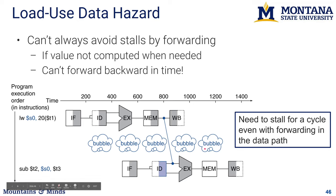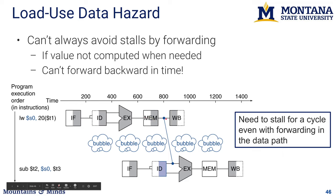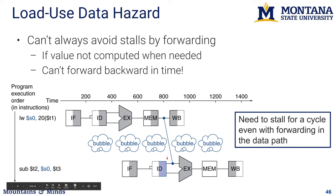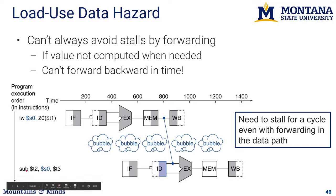Forwarding is more difficult with a load instruction because the data isn't available until after the memory stage — one cycle later than with a regular instruction. We can still use bypassing, but from the memory stage output, which means we still need to insert one stall cycle. That stall cycle can be used by another independent instruction if one is available — for example, moving an independent instruction up between the load and the dependent subtract, filling the empty cycle productively.